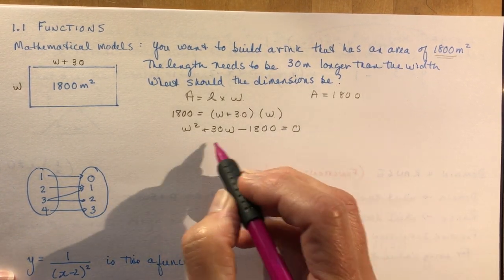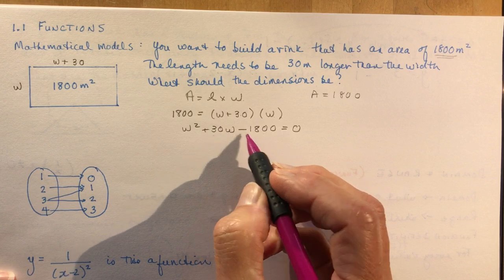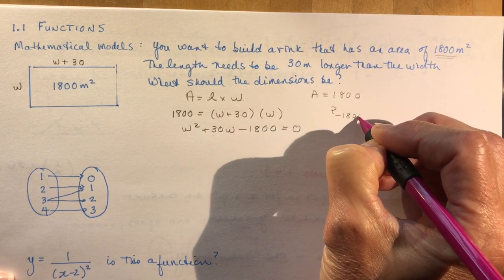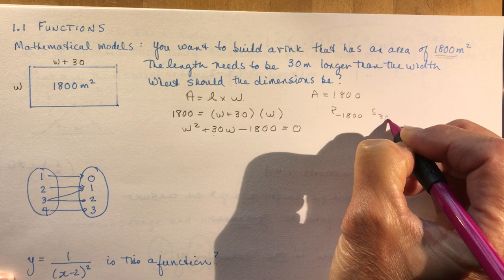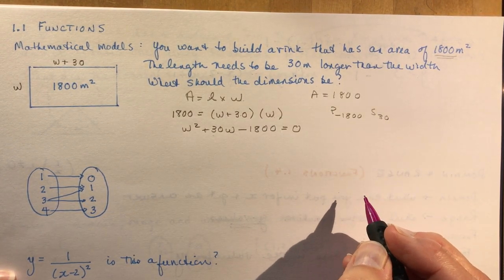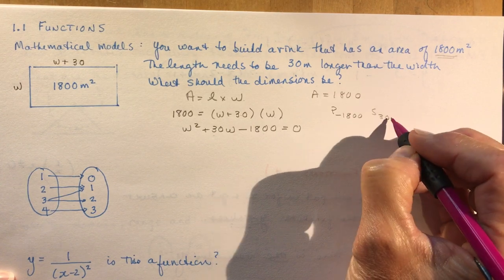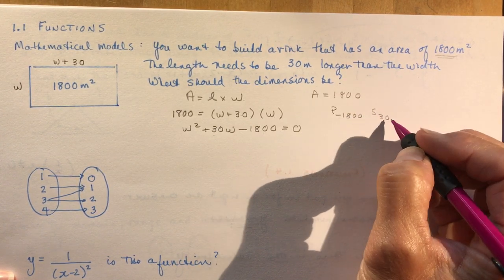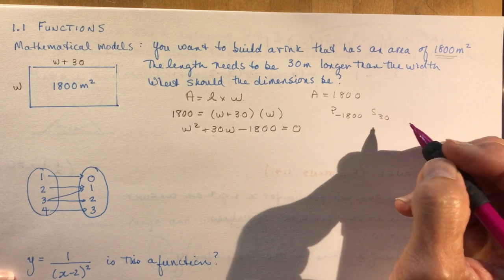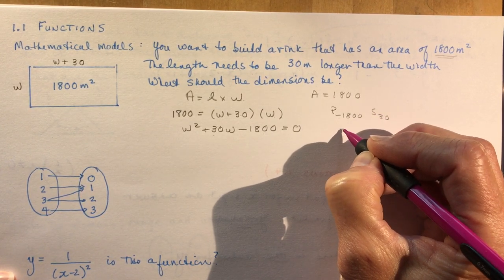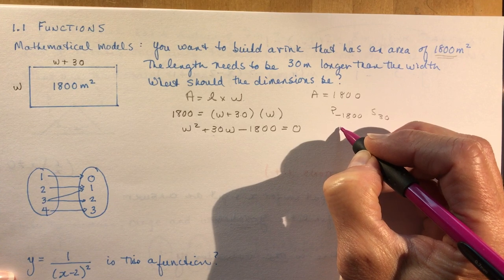Now if you get to this point and you're going, it multiplies to negative 1800 and adds to 30. Some of you might have a little bit of problem figuring that out. But if you think just a little bit, you know that 18, forget about the zeros for a minute. 3 and 18, that's like 6 and 3, right? So yeah, sure it works.